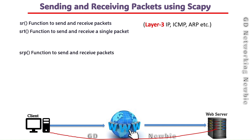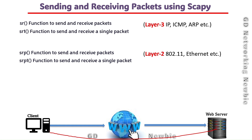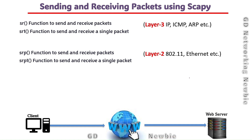We also have 'srp', which is used to send and receive packets, and 'srp1', which is used to send a single packet and receive a single packet. The difference is that srp and srp1 are used to send layer 2 frames — for example 802.11, which we call Wi-Fi, and also Ethernet frames. So sr and sr1 are for layer 3, while srp and srp1 are for layer 2.